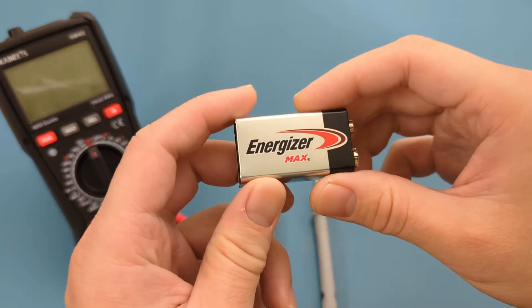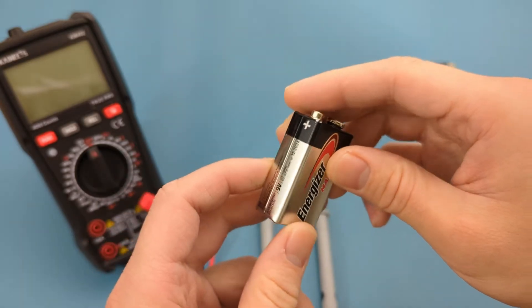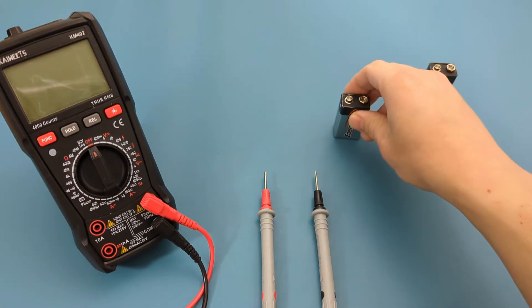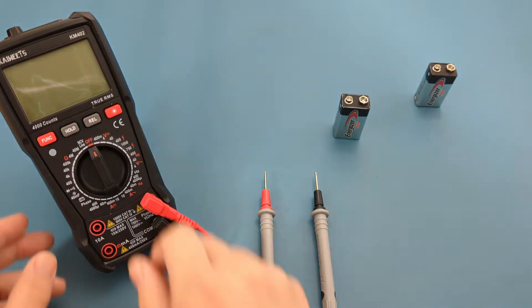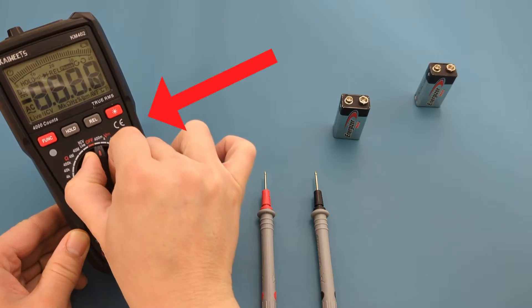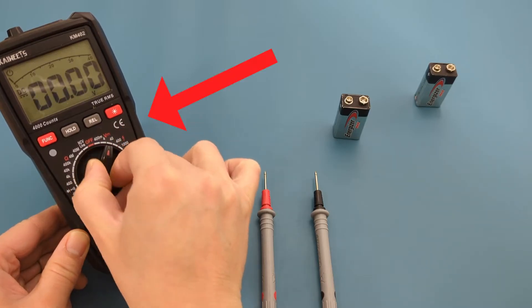The first thing you want to do is identify the positive terminal on the battery. The plus sign indicates it. On the multimeter, turn the dial to the voltage setting. Since we're testing a 9-volt battery, you can set it to 40.